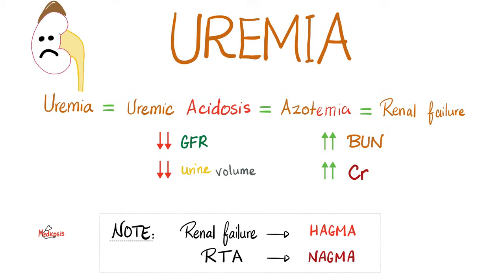With acute tubular necrosis — intrarenal azotemia — what's going on? Uremia: lots of BUN and creatinine in the blood, less GFR, less urine volume. Don't forget that acute or chronic renal failure leads to HAGMA (high anion gap metabolic acidosis), whereas renal tubular acidosis leads to NAGMA (normal anion gap metabolic acidosis). The serum anion gap is high in renal failure but normal in renal tubular acidosis.